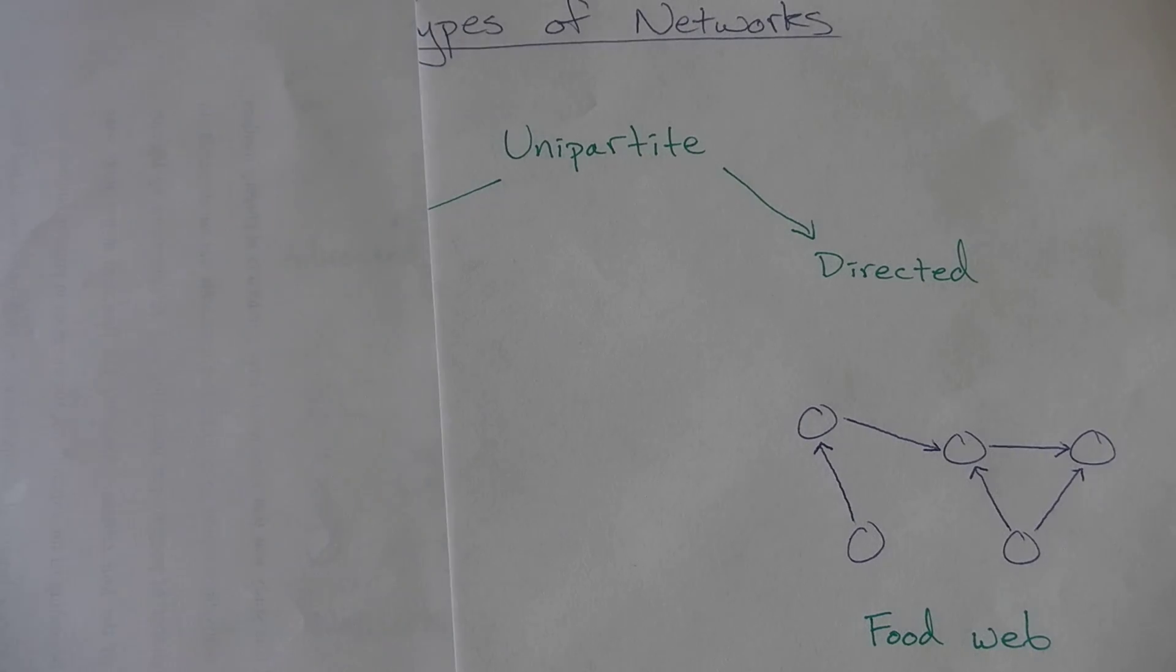First, I'm going to cover up the undirected network and talk about a directed network, which is something we typically encounter. A directed network is an example of a food web.